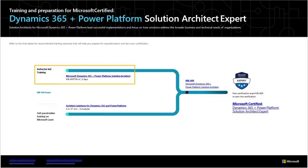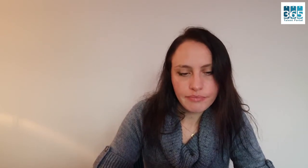Before we wrap up, let's take a closer look at the training resources available to help you prepare for your MB600 exam. The first is instructor-led training — the official Microsoft MB600 Dynamics 365 Plus Power Platform Solution Architect course, built to be delivered over three full days. The other option is self-paced online training using Microsoft Learn, with a pre-made learning path that takes about four hours to complete and covers five modules.